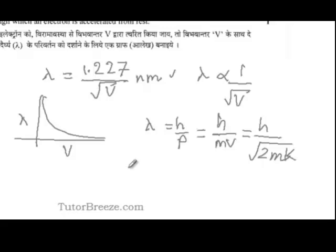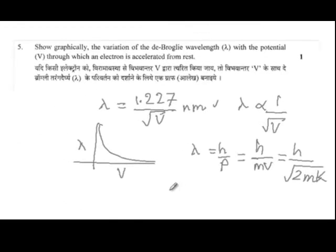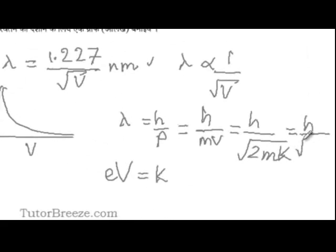Now see over here it is given in the question that the electron is accelerated through a potential difference of V volts. So the energy acquired by the electron is E times V the potential difference and this energy is equal to the kinetic energy of the electron. So plugging in this value over here we get the de Broglie wavelength equals H over root 2mEV.